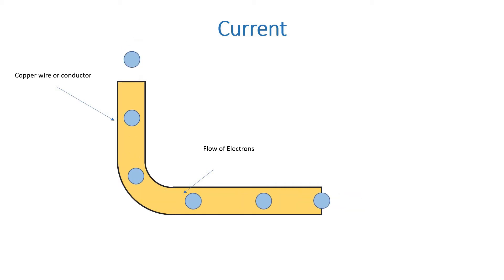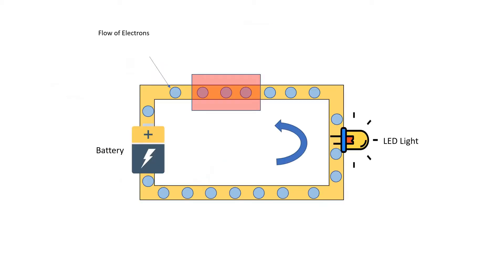Now one thing you need to understand here is the higher the number of amps means the higher the current is forced through the wire. Okay, now let's consider we have a closed circuit and here you can see the circuit.